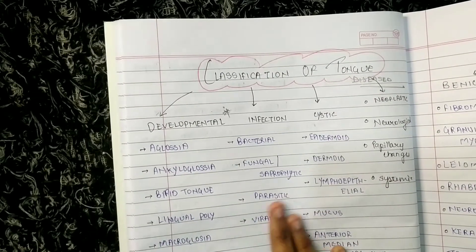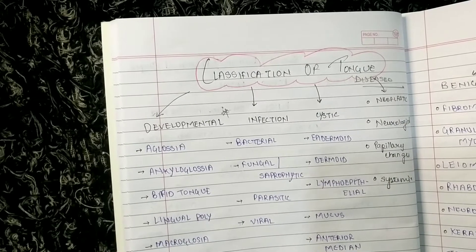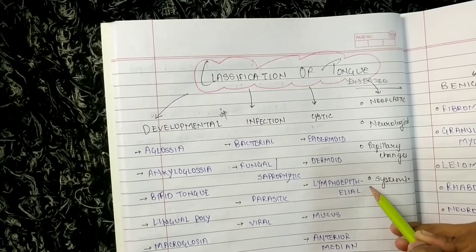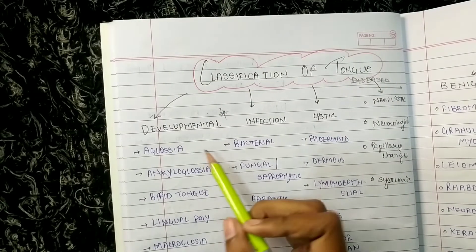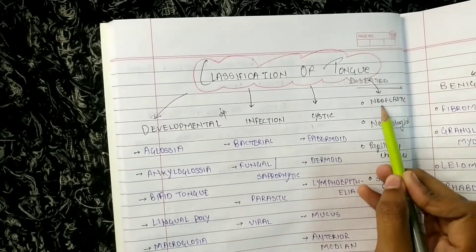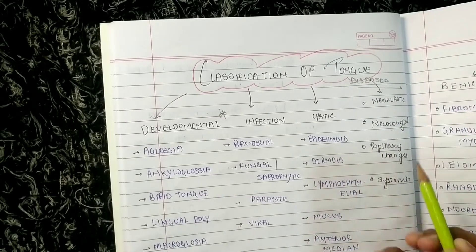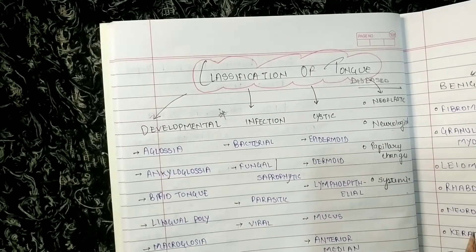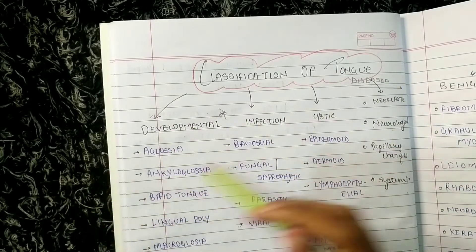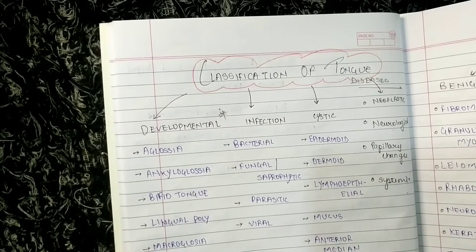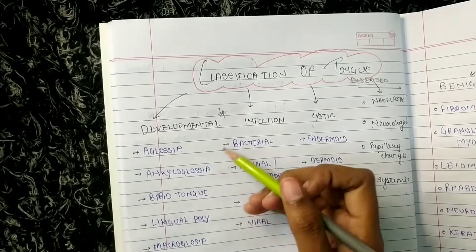So the classification of tongue — we have divided it into seven parts. First is developmental, then infection, then cystic, then neoplastic, neurological, papillary changes, and systemic. These are the categories in which tongue diseases have been classified. So firstly we will see developmental.